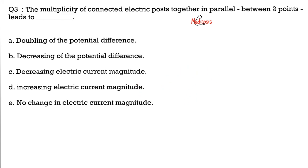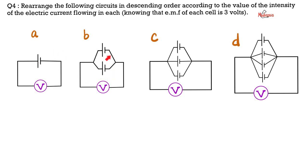I'll tell you where to find the answer key in a moment. Question 4. Rearrange the following circuits in descending order according to the value of the intensity of the electric current flowing in H, knowing that the electromotive force for each cell is 3 volts. Let me know your answer in the comments.